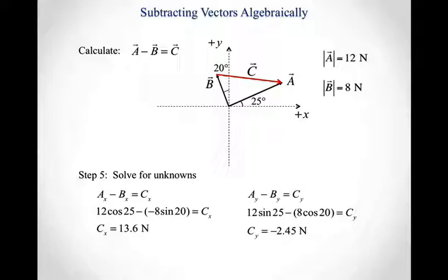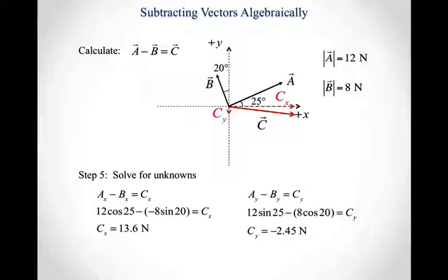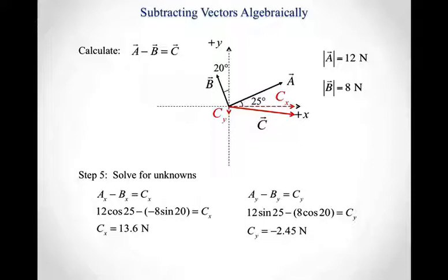Once we've calculated the components, it's useful to slide vector C down so it's also sitting at the origin, making it easier to see its x and y components. Graphically, the x component of vector C points to the right and the y component points down. The x component is relatively large and the y component is relatively small, which is consistent with what we calculated. The important takeaway is that the process for vector subtraction is fundamentally the same as for vector addition — we're just setting up a subtraction equation, and therefore have more minus signs to keep track of correctly when setting up and solving the algebra.